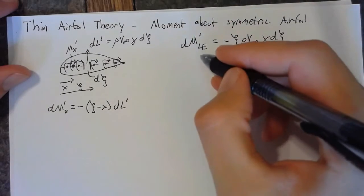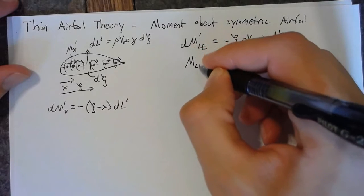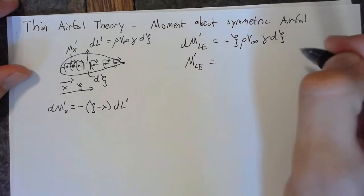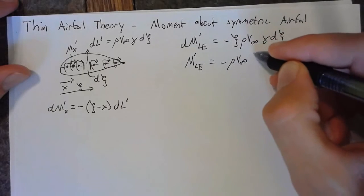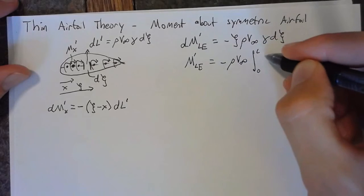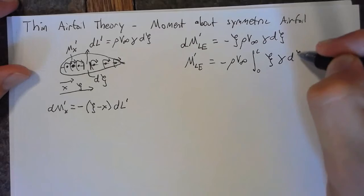Now we'd like to calculate all of this, so we'll integrate over the chord. Our complete moment is equal to the negative, and we'll bring out some of these constants. So we have ρV∞ integral from 0 to c of ξ γ dξ.